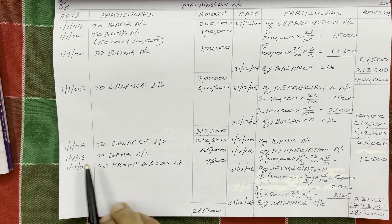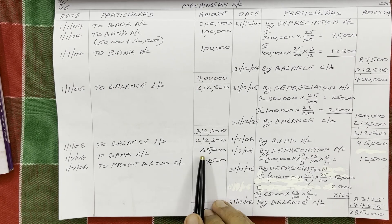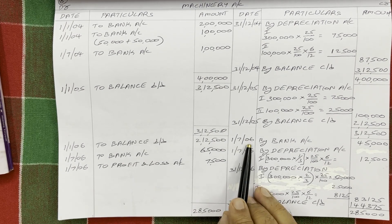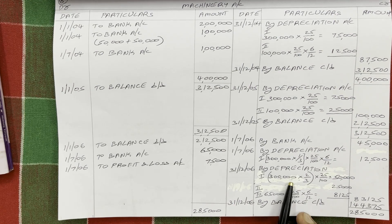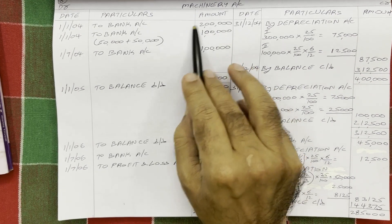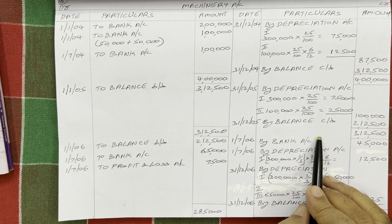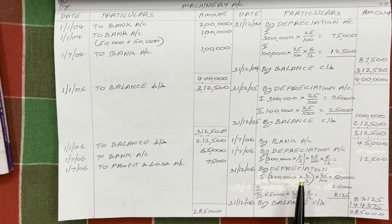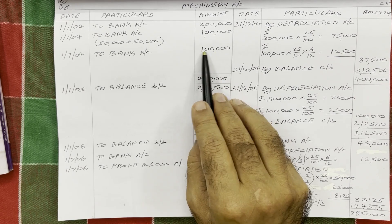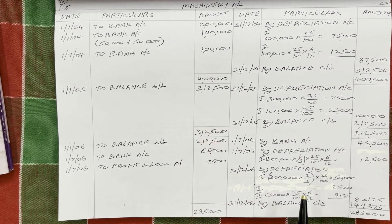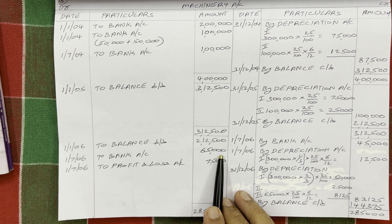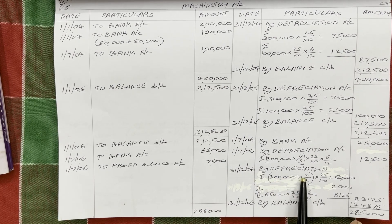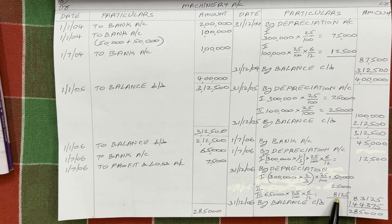Now for the purchased asset: on the same day, 1st July 2006, another asset was purchased for 65,000 — on the debit side, to bank account: 65,000. At the end of 2006 year, which assets do we have? First asset: two-thirds of the 3 lakh machine remains. Second asset: 1 lakh worth machine — not yet sold. Third asset: 65,000 purchased in 2006. So three assets, and depreciation must be calculated separately on each.